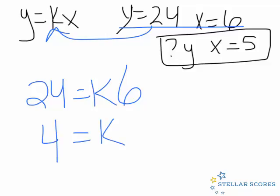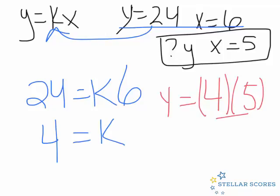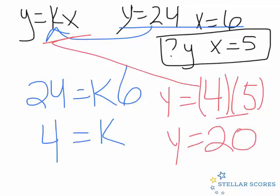Now we know k equals 4, and we want to figure out what y is when x equals 5. I'm taking these values and putting them back into the equation to solve for y. 4 times 5 is 20, so y equals 20. Looking at the answer choices, that is choice C. Thank you.